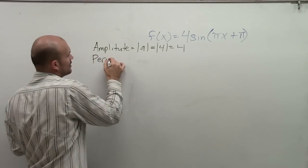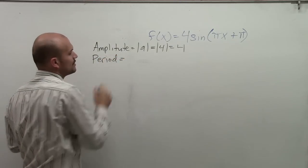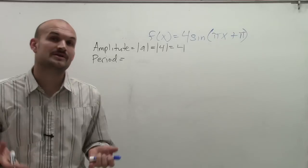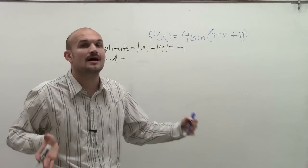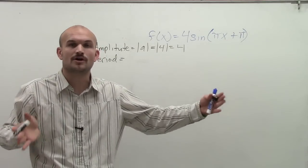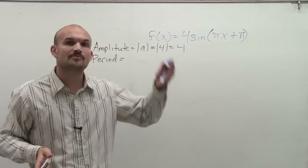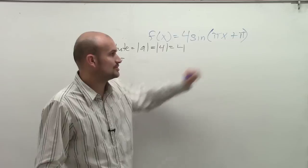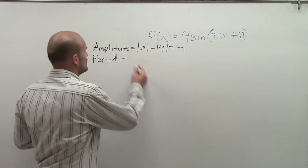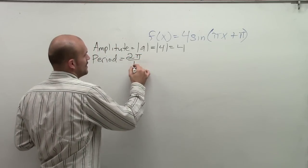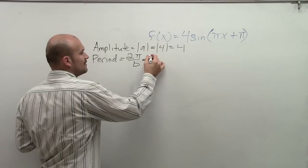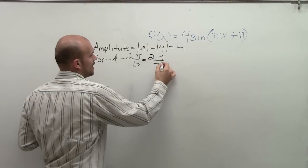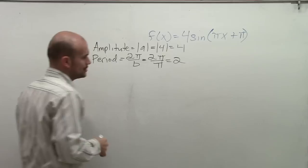The next thing we want to determine is the period. The formula for a period is 2 pi divided by b, and that's going to be how long it takes for our graph to complete one cycle. Our b in this case is the coefficient of x, which is pi. So our period is 2 pi divided by pi, which equals 2.